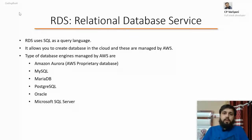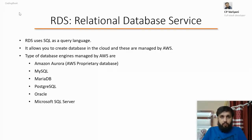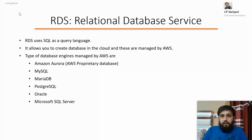Now, Relational Database Service. Let's suppose you have decided about your application's database — you've finalized that you are going to have a relational database, meaning a normalized database with foreign key and primary key concepts. Once this is finalized, the next step is to come to AWS and create a Relational Database Service. RDS uses SQL as a query language, which we are all familiar with. It allows you to create databases in the cloud, and these are managed by AWS automatically.